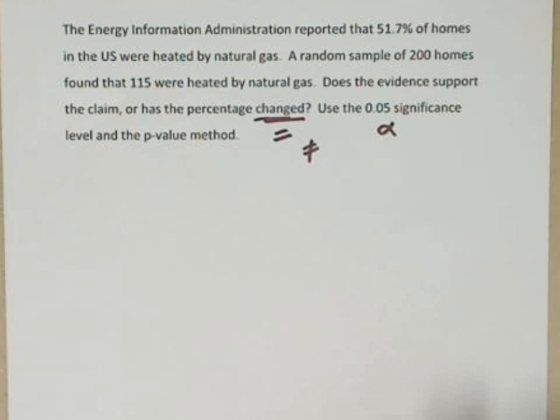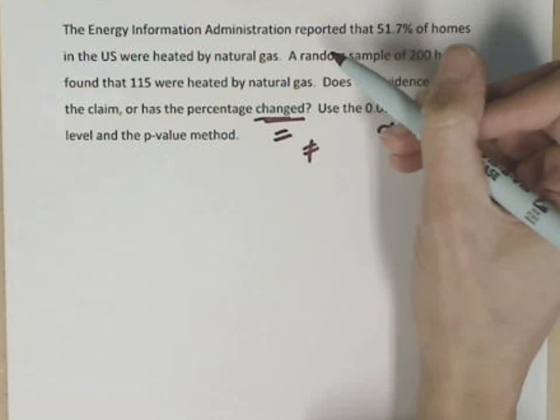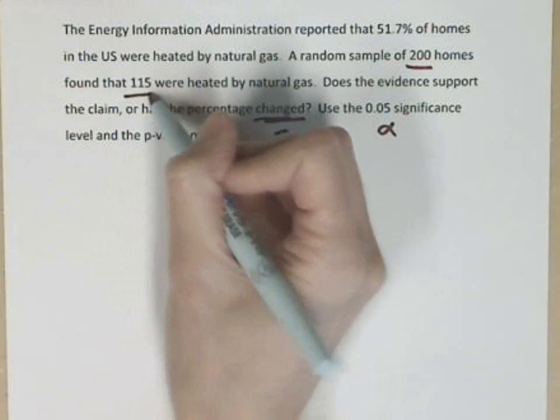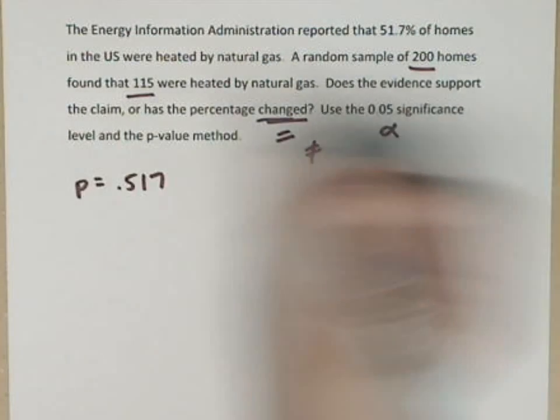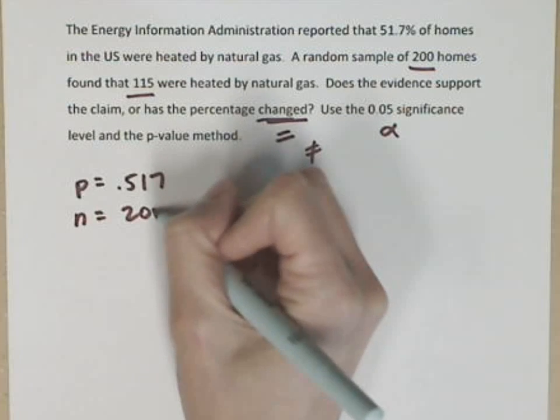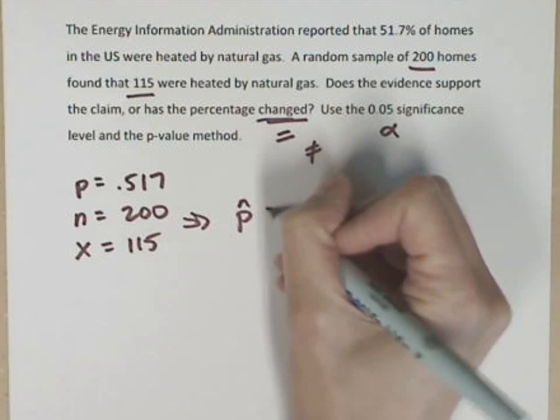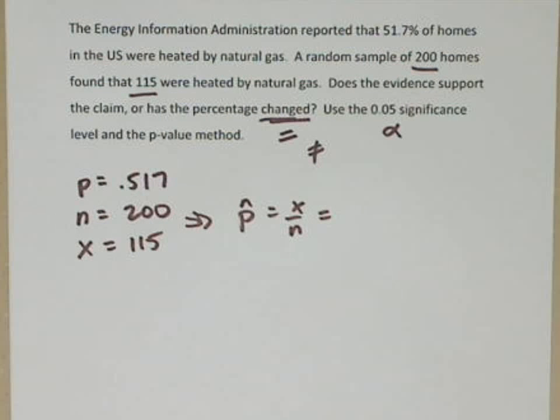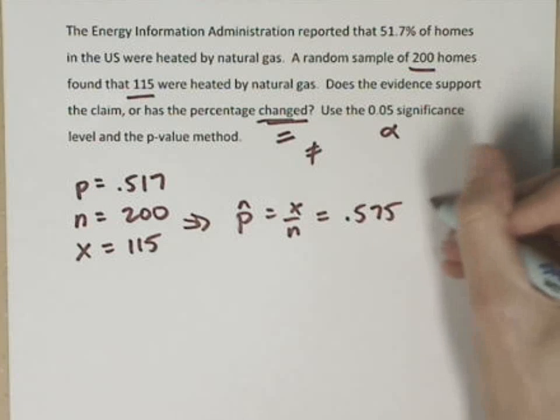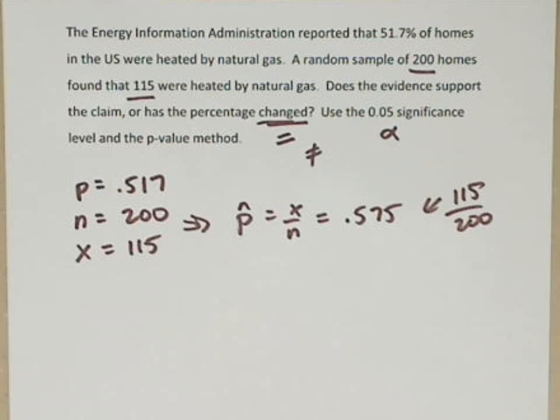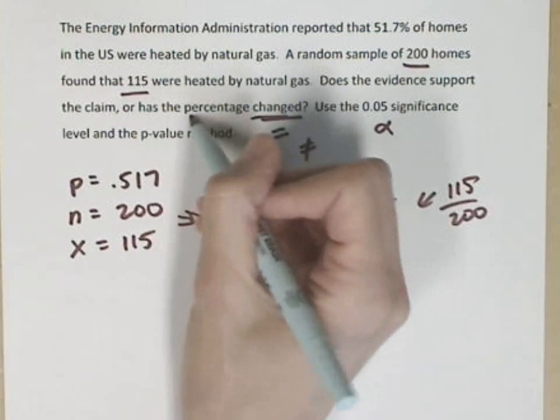We have a .05 significance level. As I put the rest of the information together, 51.7% is what we got from this energy administration. My sample is the 200 and 115. So P is .517, n is 200, and we found 115, so that's X. I put those two together for P-hat. P-hat is X divided by N, which is 115 divided by 200, and we get .575. Note that it says use the p-value method.